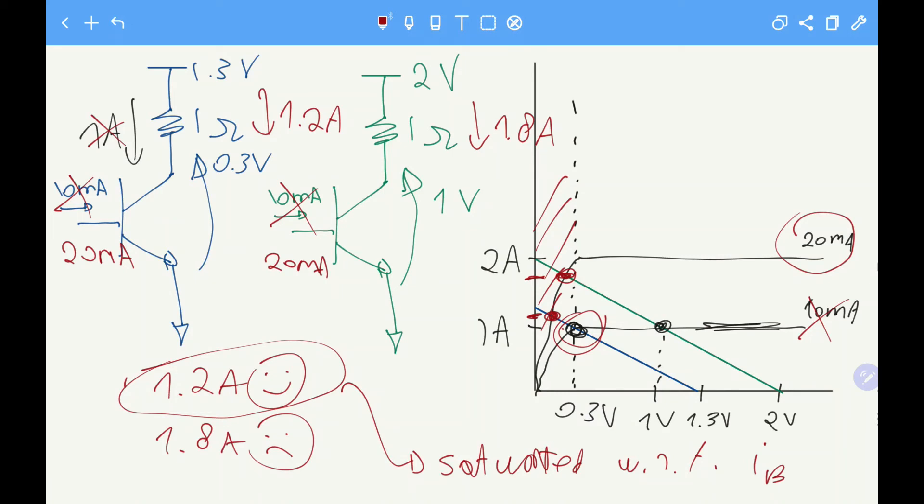So those are the two reasons why you should bias your transistors in the saturation region when you're utilizing it as a switch. So the first reason why is because it consumes less power and the second reason is because it's safer. So I hope you learned something from this video. And if there are any questions, please leave them in the comments below. Thanks.